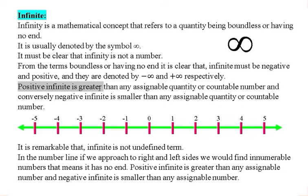Positive infinity is greater than any assignable quantity or countable number. And conversely, negative infinity is smaller than any assignable quantity or countable number.